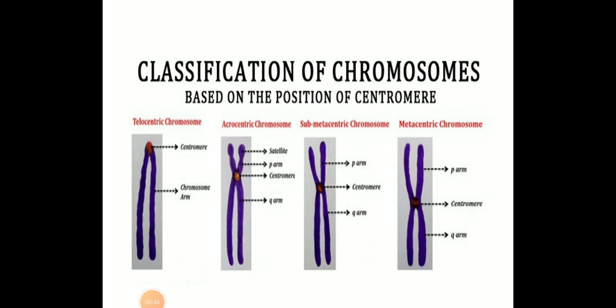This is the classification of chromosomes based on the position of the centromere. As you can see the centromere in the first one — the telocentric chromosome — the centromere is placed and the chromosome arms are stretched, of the same size, and mainly present on one side. That is how telocentric chromosomes look. In acrocentric chromosomes, one arm is very much elongated and one arm is very much condensed.